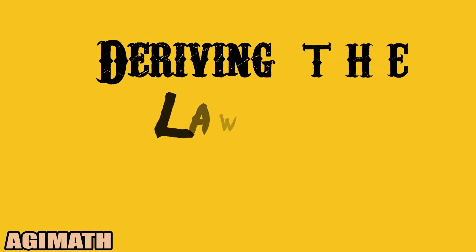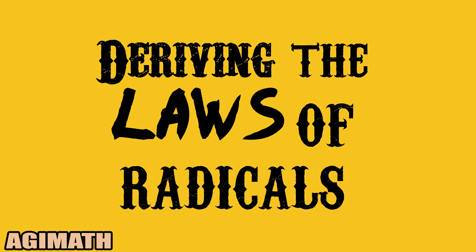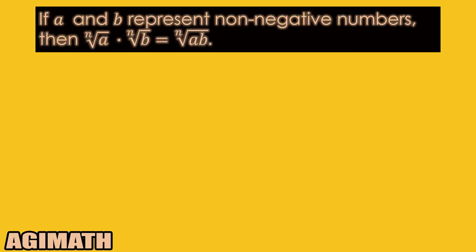In simplifying radicals, we need to apply the laws on radicals. In this video, I'm going to show you how we are going to derive the commonly used laws of radicals. Let's have the first one: if a and b represent non-negative numbers, then the nth root of a times the nth root of b is equal to the nth root of ab.